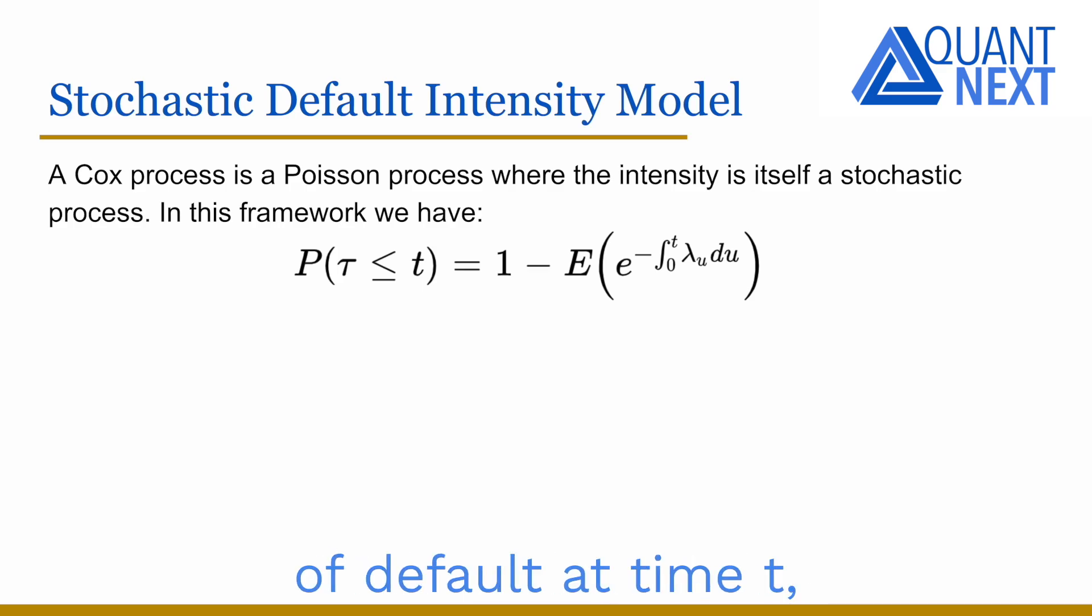In this framework, the probability of default at time t, so the probability that tau is below t, is equal to 1 minus the expectation of the exponential of minus the integral of lambda between 0 and t. So an expression similar to the previous one but using the expectation.